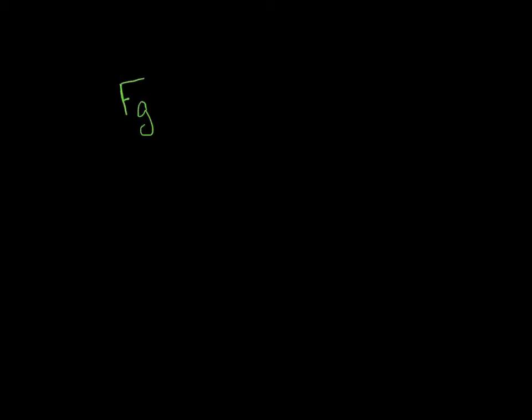The law of universal gravitation, like any law — like Newton's second law, force equals mass times acceleration — can be expressed as an equation. It's that the force of gravity is equal to big G times M1 times M2, over R squared.